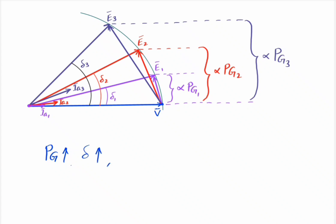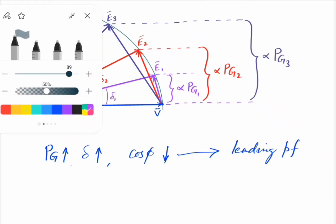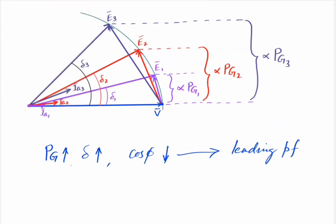With increasing mechanical input, power factor (cos φ) decreases for the leading power factor case, as shown in the figure. By increasing mechanical input, the active power output of the alternator increases from Pg1 to Pg2 to Pg3; at the same time, armature current also increases from Ia1 to Ia2 to Ia3, and power factor decreases.